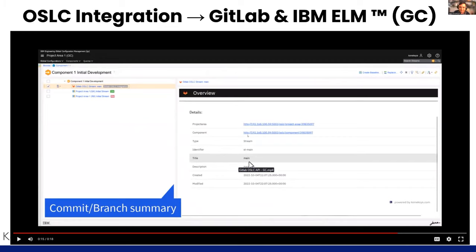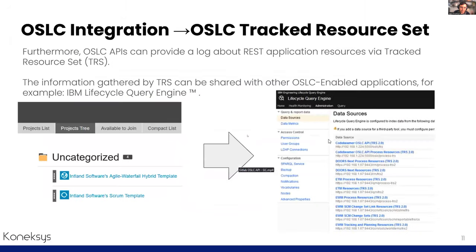Finally, it is possible to see the complete feature provided by the OSLC stream for GitLab using the preview UI dialogues. Regarding the OSLC Track Resource Set, the OSLC APIs generated by Coatl provide a view of the REST application via the Track Resource Set — gathering specific information of REST resources exposed on the OSLC side and monitoring which changes these resources have undergone.